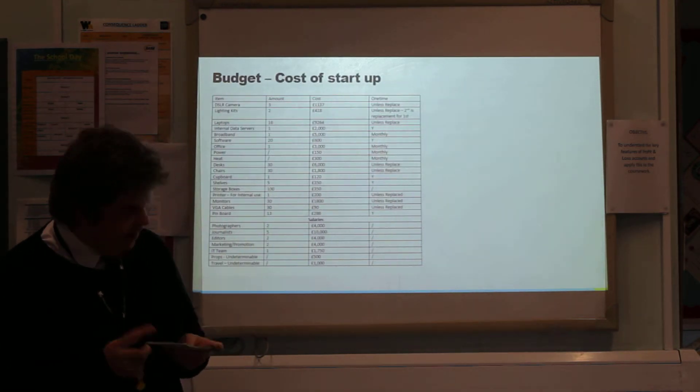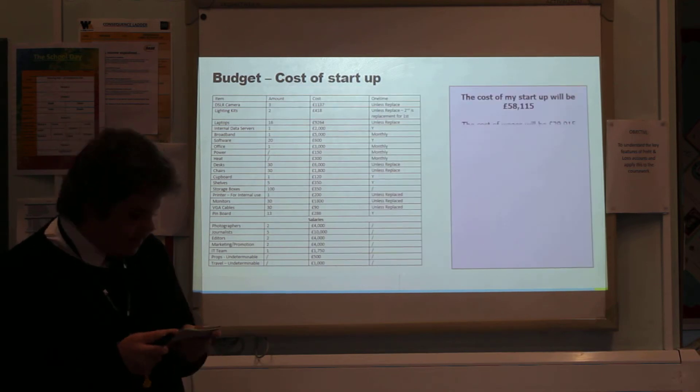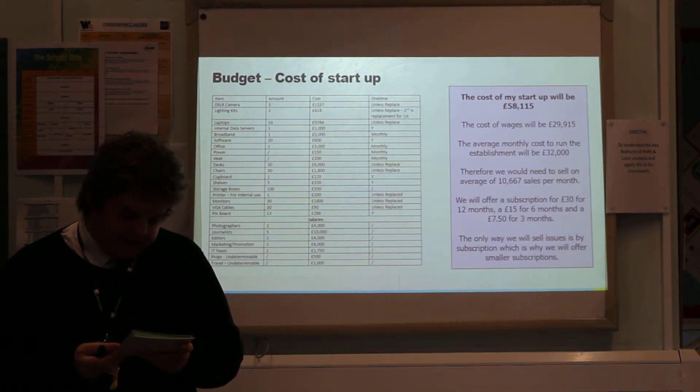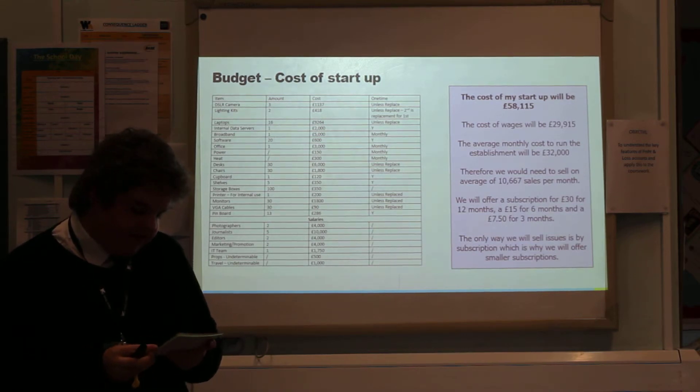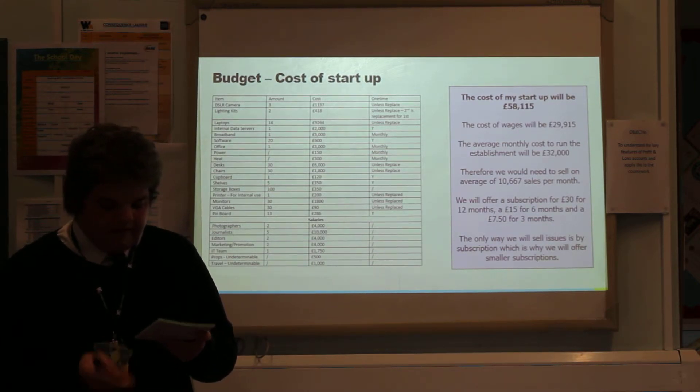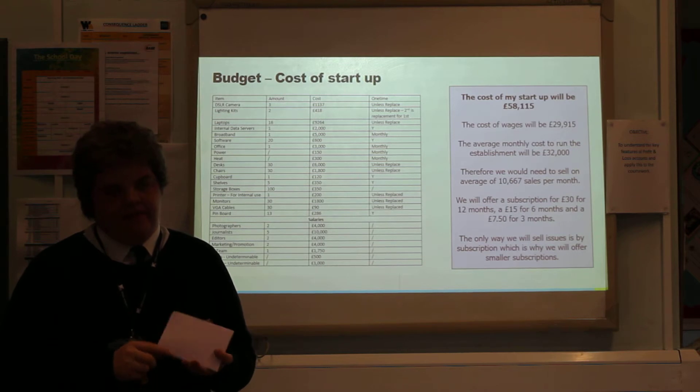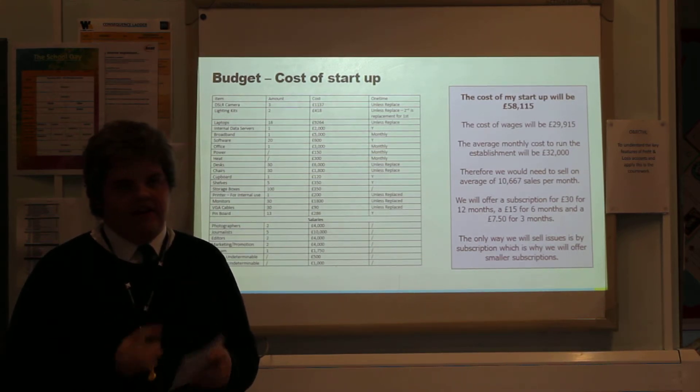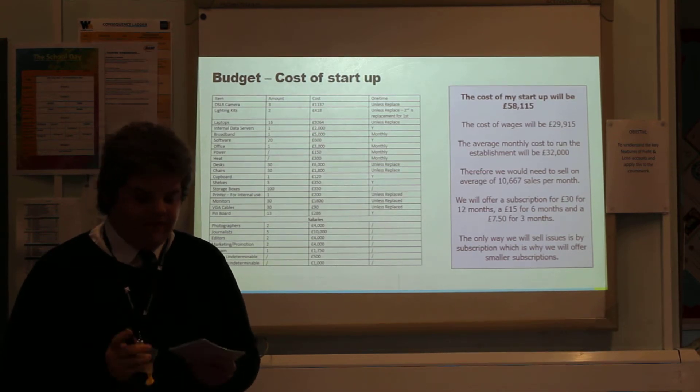Now, let's look at the costs. To start our magazine, it will cost £58,115. Staff wages will cost £2,000 per month. That means we'll have to sell around 10,700 copies of the magazine every month in order to make a profit. But of course, we'll make a loss in year one, as every product will.